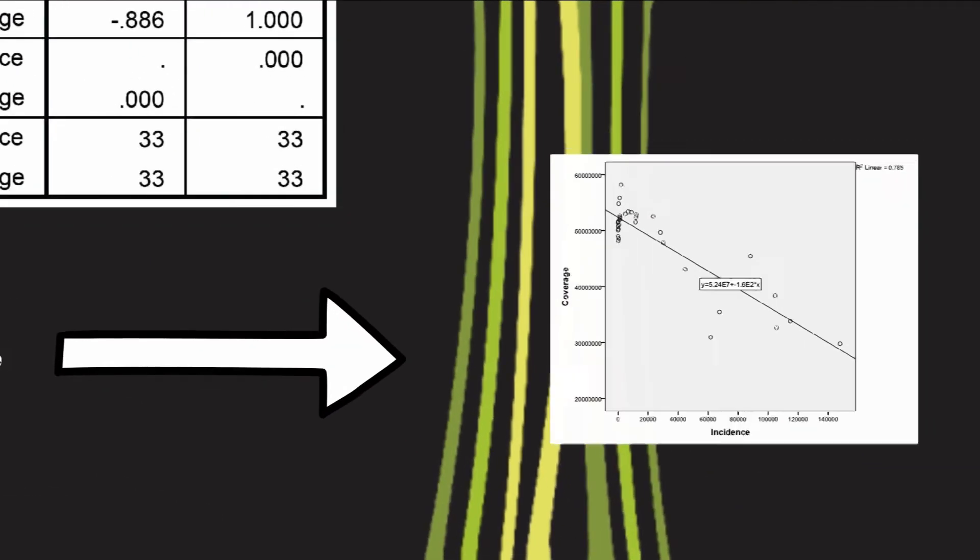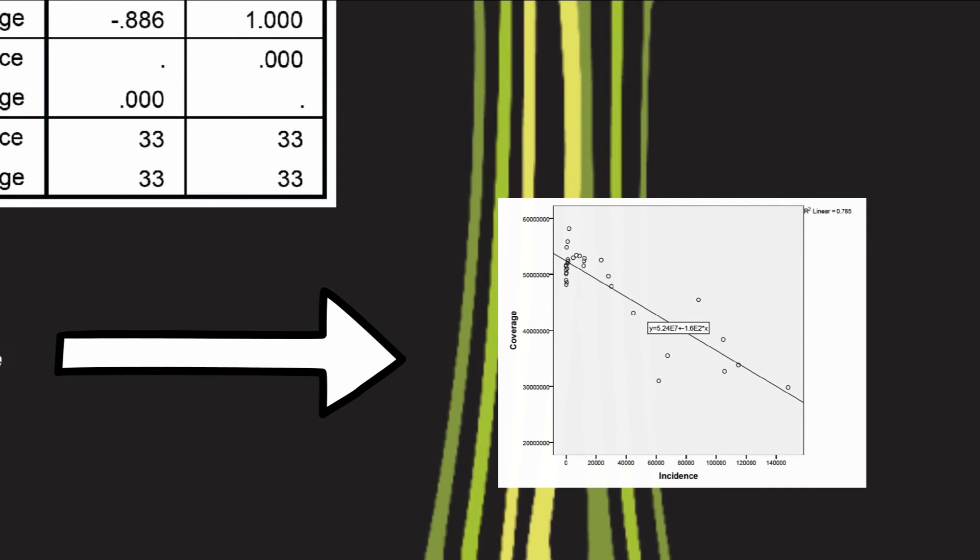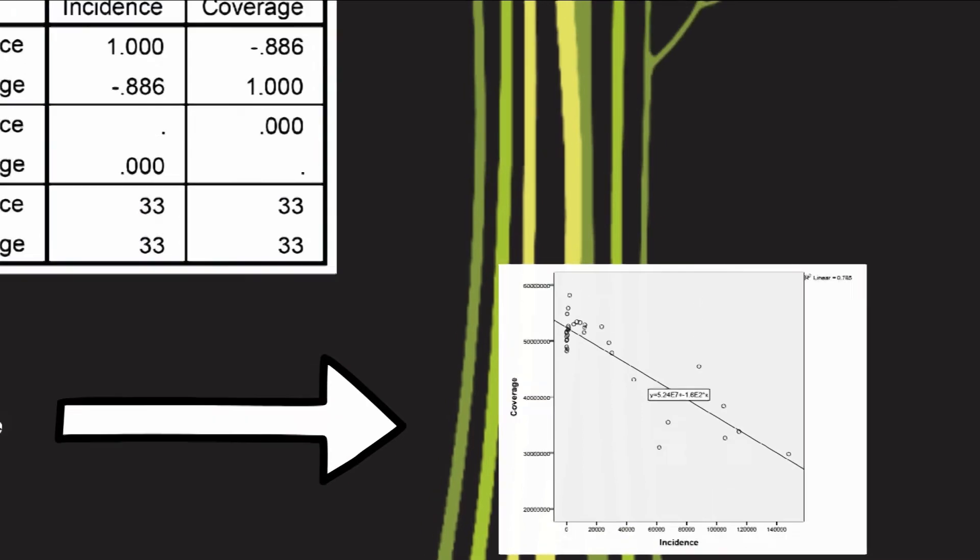A scatter plot of the correlation demonstrates the negative slope of the relationship between incidence and vaccinations in the United Kingdom.